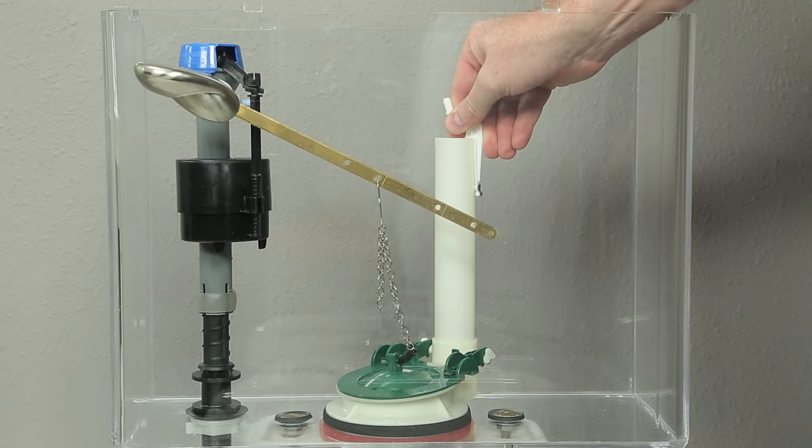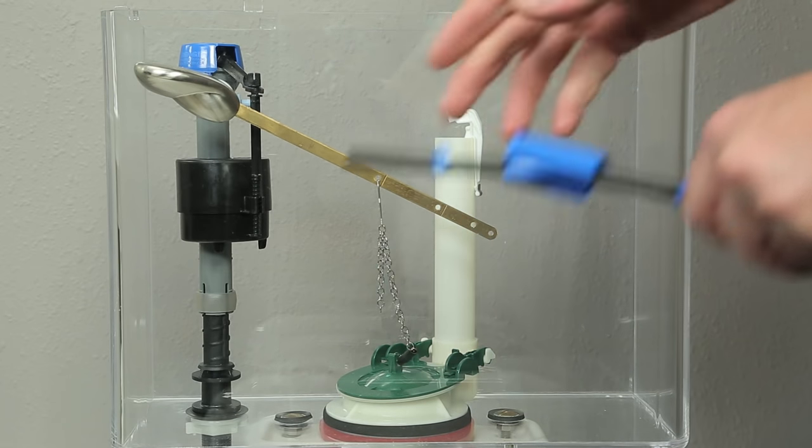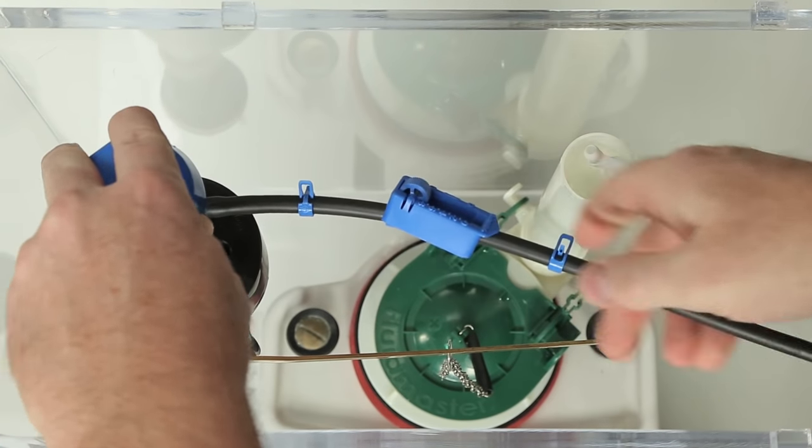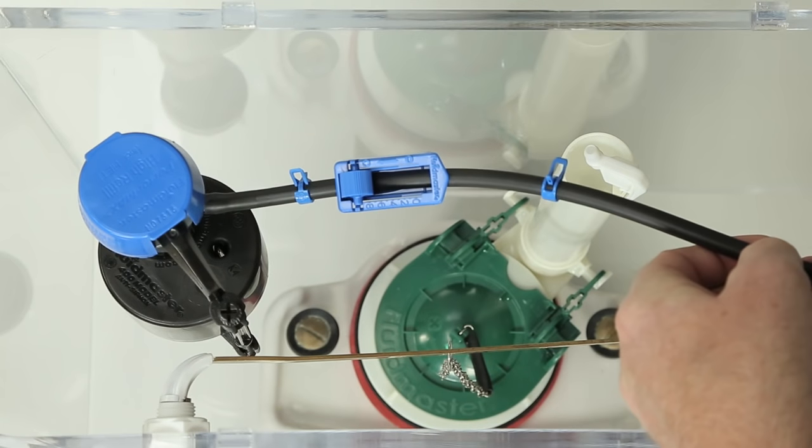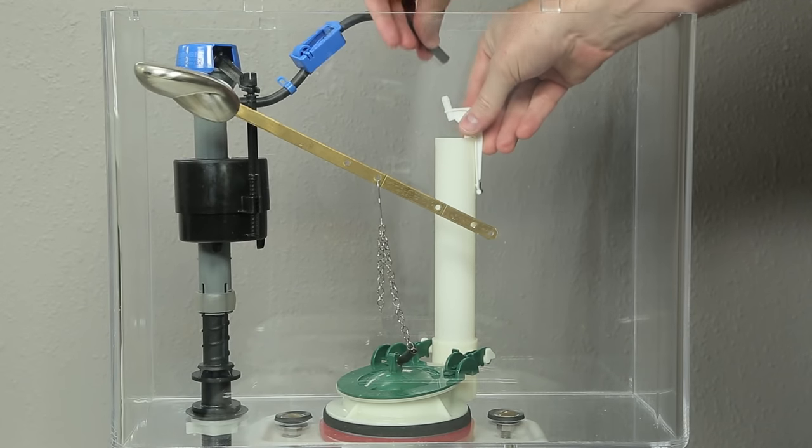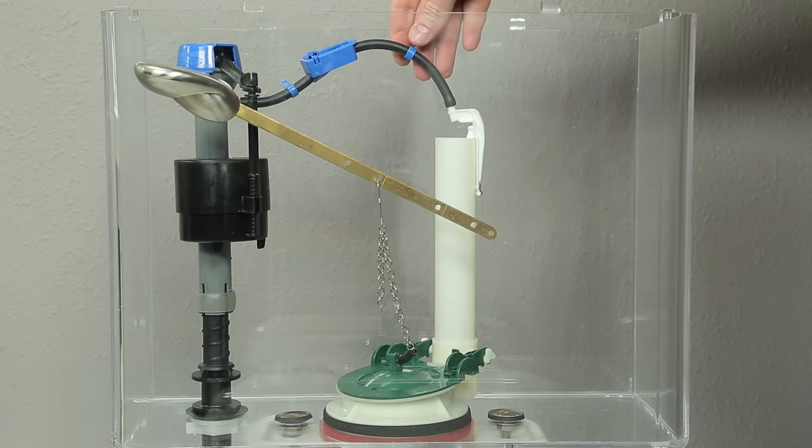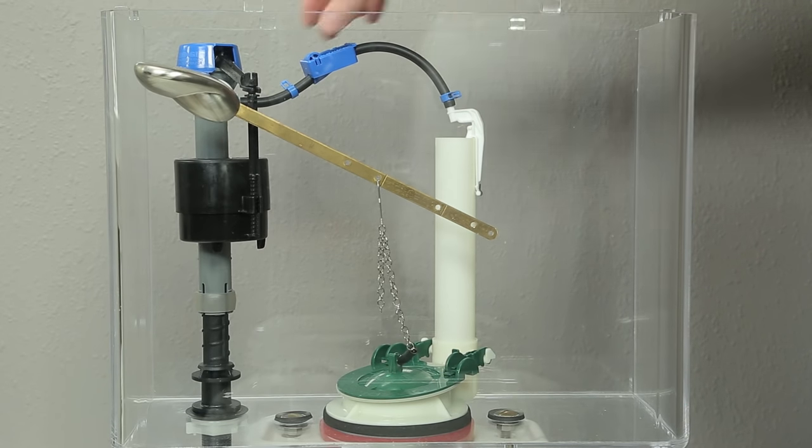Slide the refill clip onto the right side of the overflow pipe with the metal tab on the outside of the pipe. Connect one end of the refill tube to the nipple on the fill valve. Cut the refill tube to size and connect the end of the hose to the nipple on the clip. Squeeze and slide the hose clamps down to the ends of the hose. Make sure the hose is not kinked.